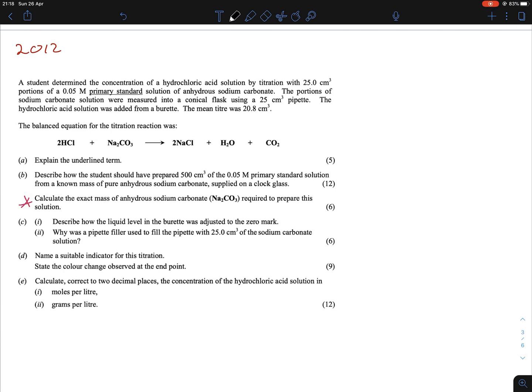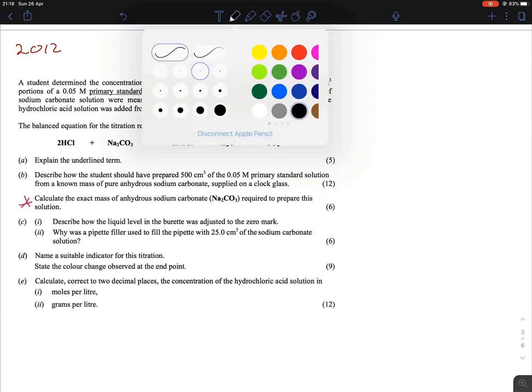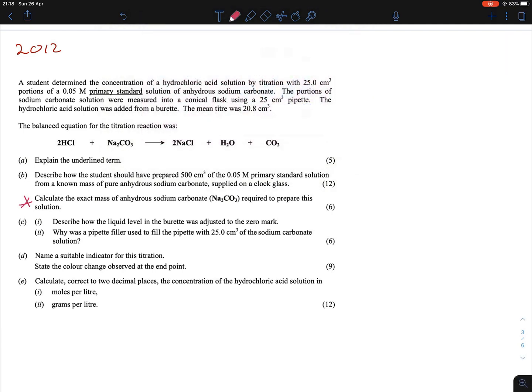We can ignore A and some of B. If we look at B there, the second part says to calculate the exact mass of anhydrous sodium carbonate required to prepare the solution. We're looking for the mass of sodium carbonate. We can manipulate our formulas, maybe we can use this one here, your number of moles equals your mass over MR. We can figure out the MR of sodium carbonate, that's 106.